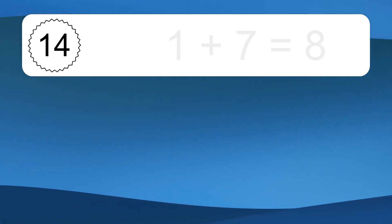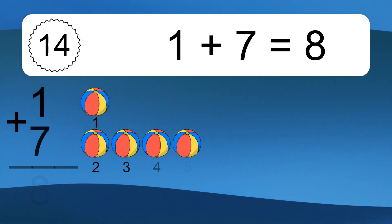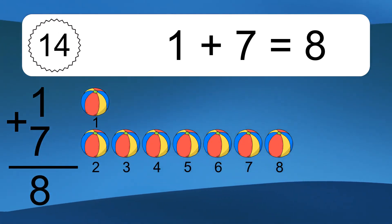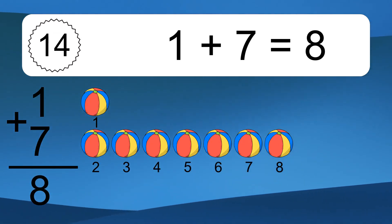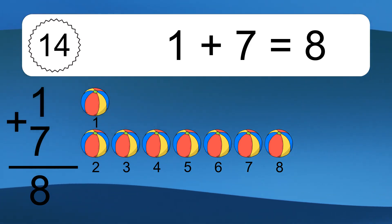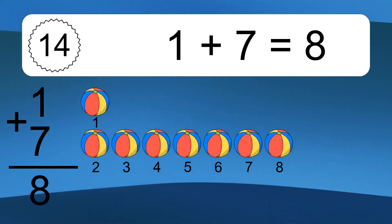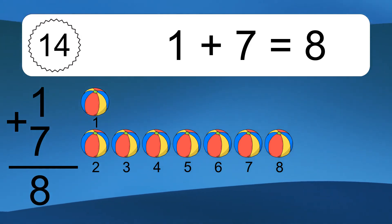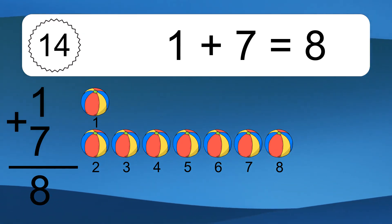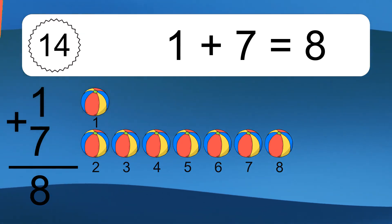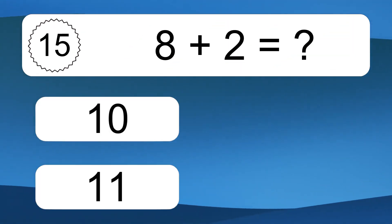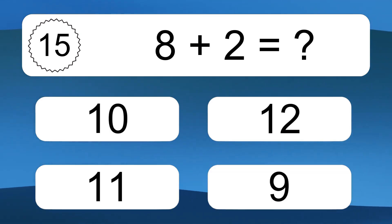1 plus 7 equals 8. 1 plus 7 equals 8. Let's count it. 1, 2, 3, 4, 5, 6, 7, 8.